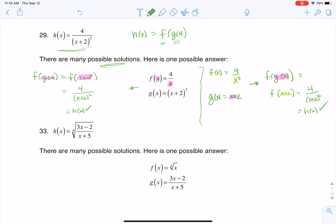So hey, use one of mine or come up with your own. Like I said, there are tons of possibilities. See if you can find another combo of two functions that when you compose them, you get h of x being 4 over x plus 2 squared. All right, thanks so much, everyone. Bye.